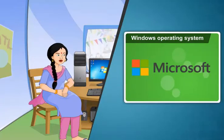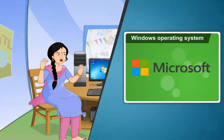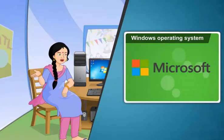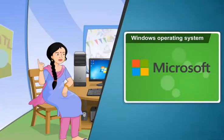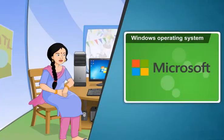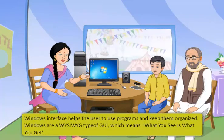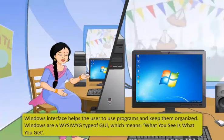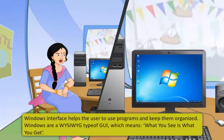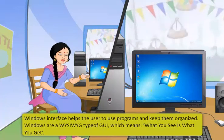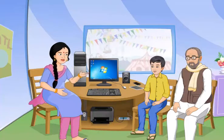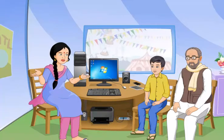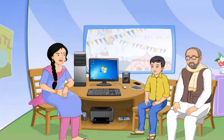In case you have a computer system without the Windows operating system, you can buy a licensed software from an authentic seller. An alternative method of obtaining the software could be through online websites such as Microsoft's website. The GUI interface helps you to use programs and keep them organized. Windows is a WYSIWYG type of GUI, which means what you see is what you get. If the operating system in your computer is Windows, the first screen that appears after switching on your computer is the desktop.